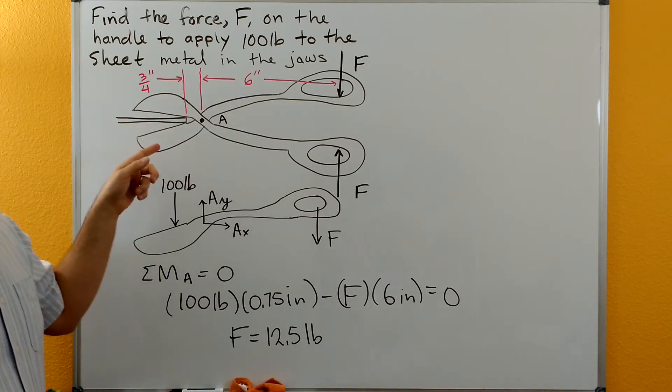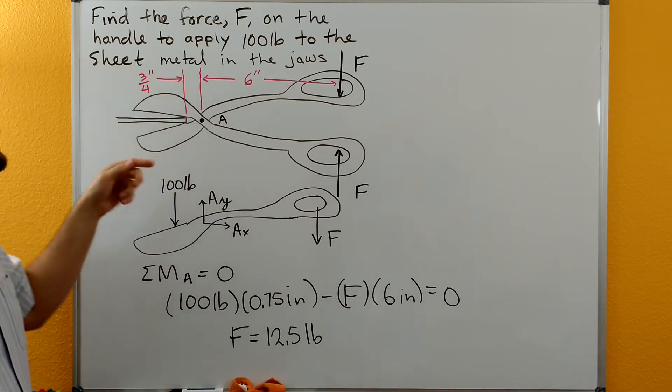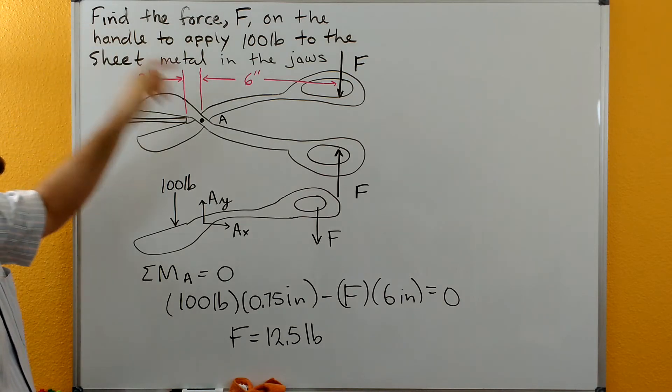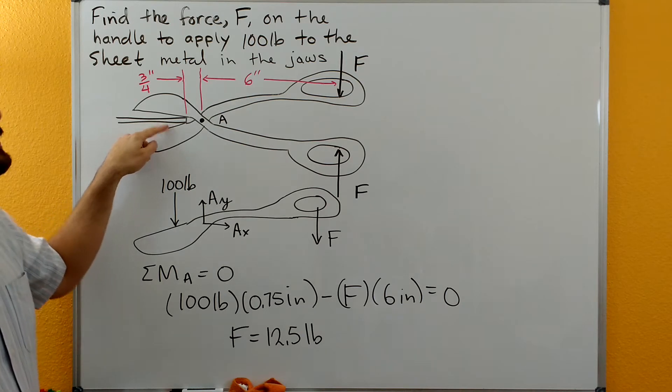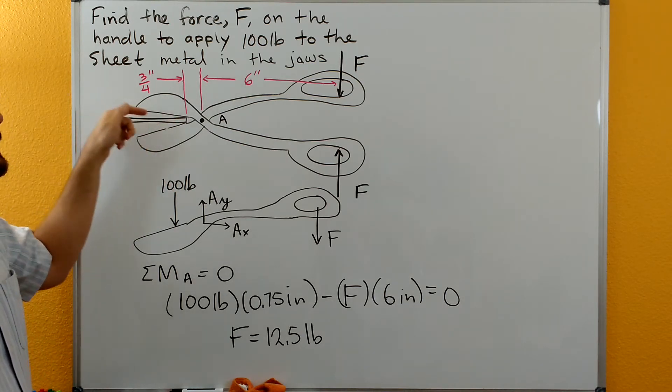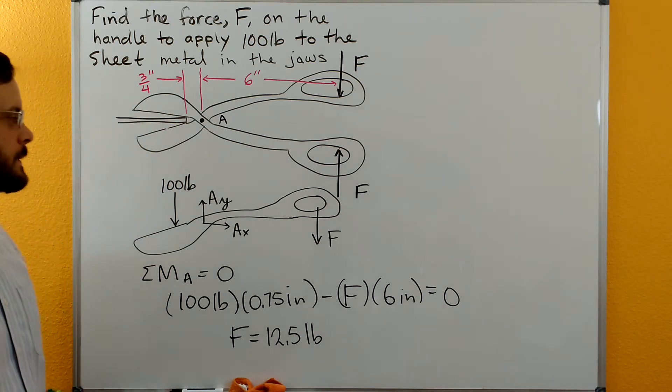Our machine is just a pair of pliers, a pair of tin snips, and we want to find the force F that acts on the handles to be able to apply a hundred pounds to the metal sheet that we're cutting with the jaws of the tin snips.